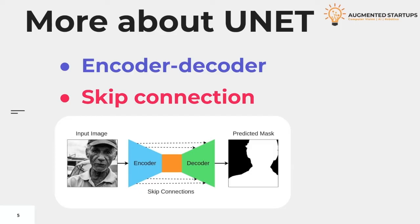The decoder then up-samples the features using the transpose convolution and concatenates them with a process called skip connection. As a result, we get a segmentation mask as the output from this network.